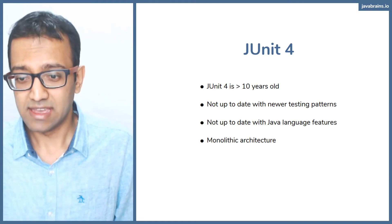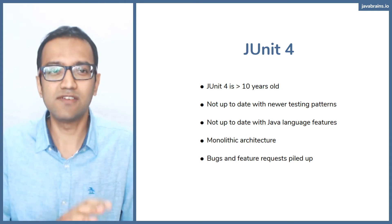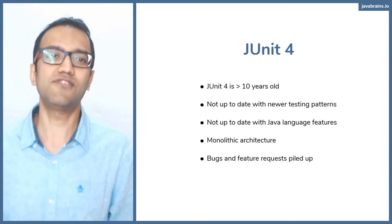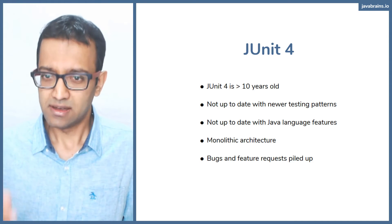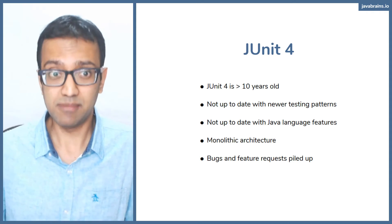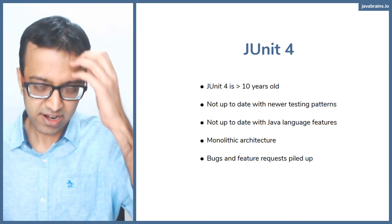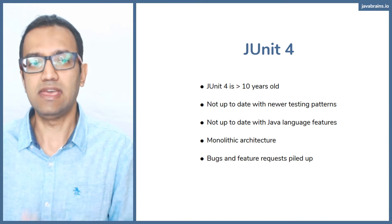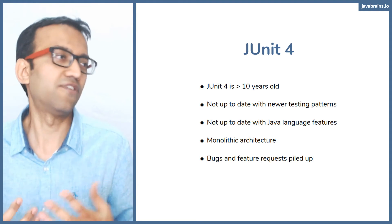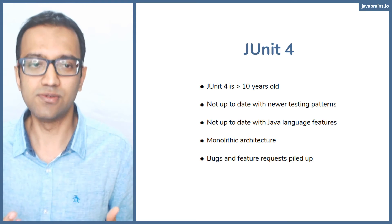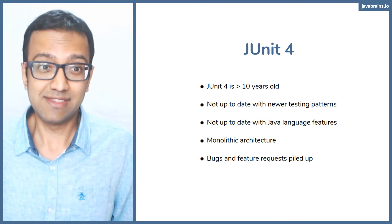With the existing state itself, without bringing in new Java features or new testing patterns, things piled up, bugs piled up, and there were feature requests that piled up. JUnit is open source software. People work on it in their free time, out of initiative — for a need to teach people, for a need to learn themselves, and to provide value to people. So things weren't going so well.